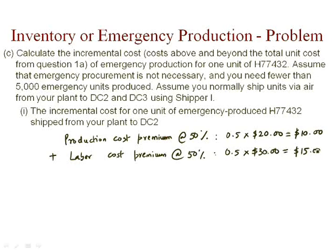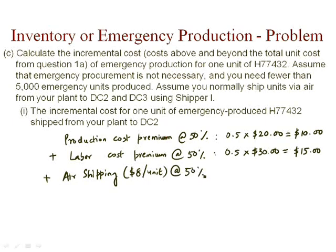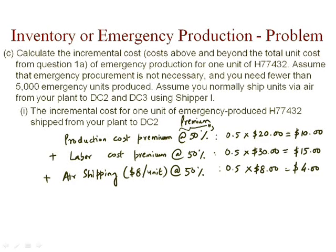Finally, from Exhibit 9 in your Lynx manual, air shipping costs $8 per unit and you pay a 50% premium on top of that for emergency production. So the air shipping premium is 0.5 times 8, which is $4. So all these 50% values are the premiums you are paying. The total additional cost per unit for emergency production is $10 plus $15 plus $4, which is $29.